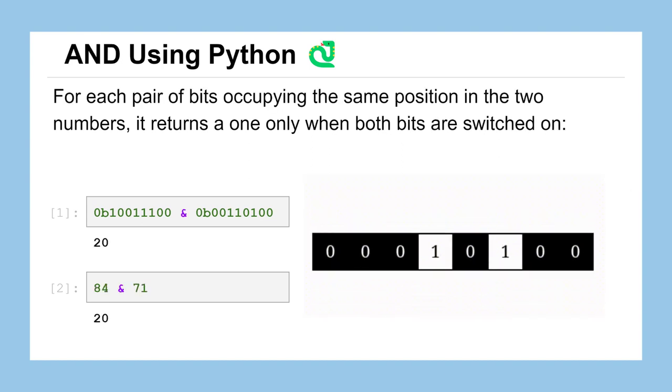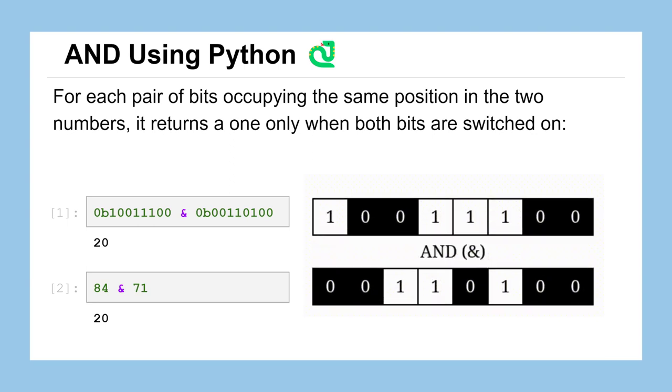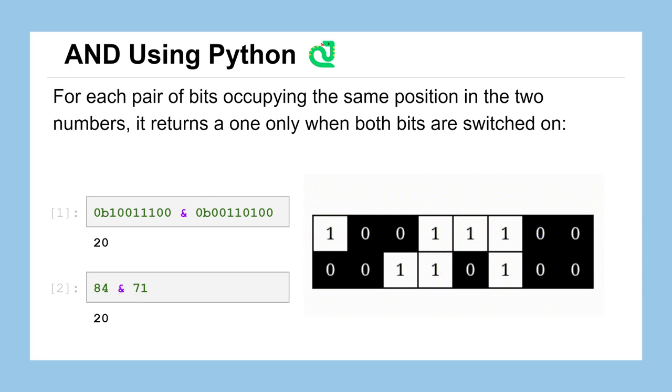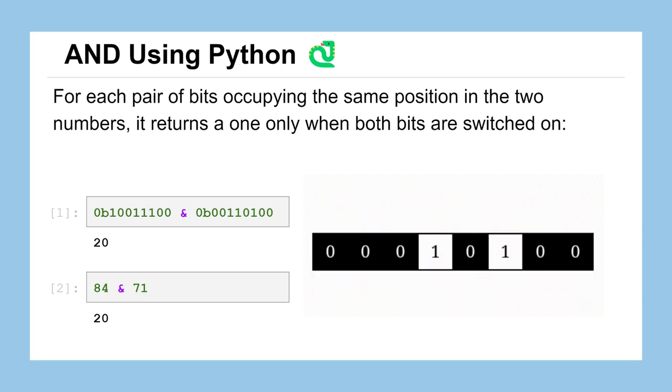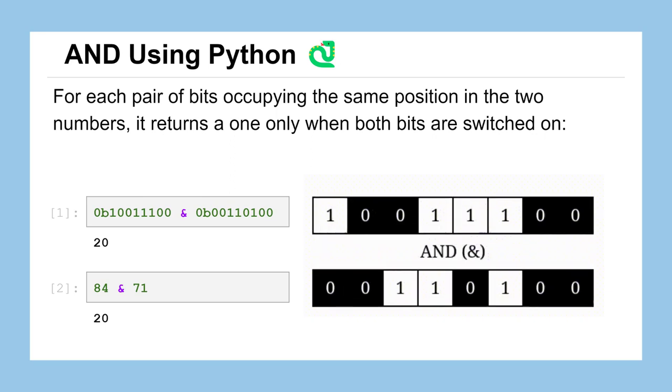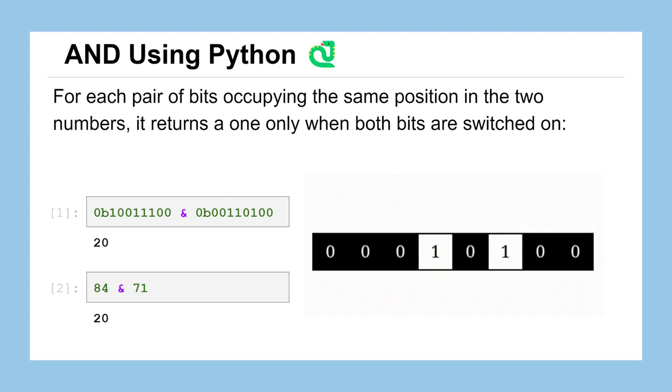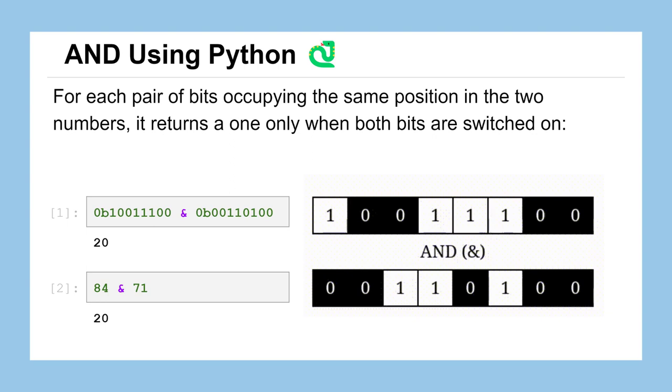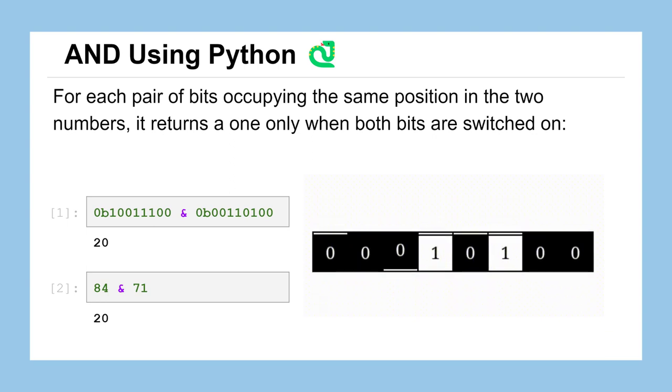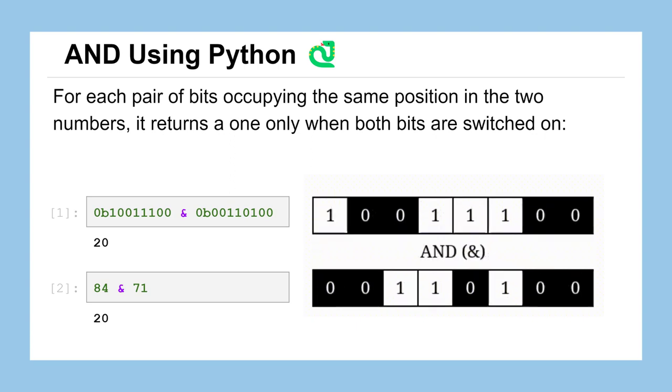We could also do an AND operation in Python, which will go through your two numbers bit by bit. And for the bits occupying the same position in those two numbers, this operation will return a 1 only when both bits are switched on. So they must both be a 1. We can see it demonstrated in the graphic on the right. Or we can do the operator here on the left using the AND symbol, or the ampersand, which is a shift 7 on your keyboard. And again, decimal, binary, doesn't matter. Python's happy to do this operation on that number.